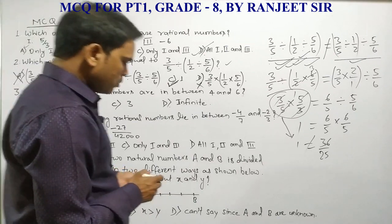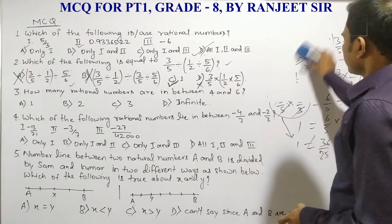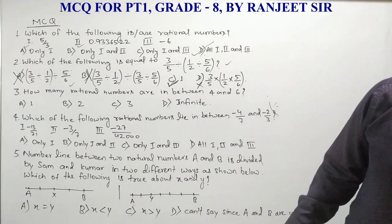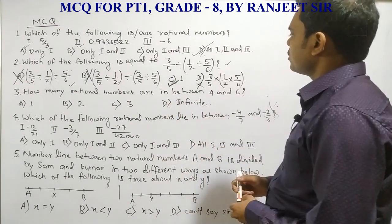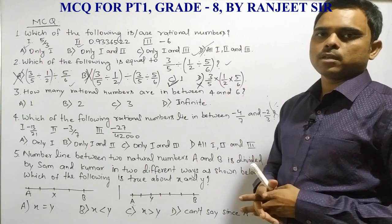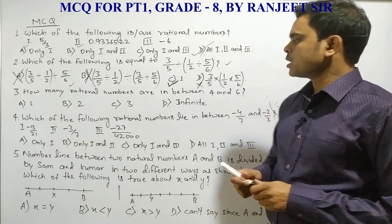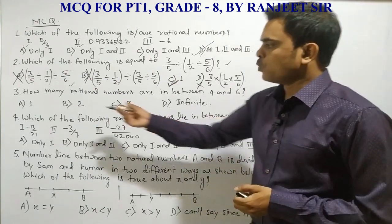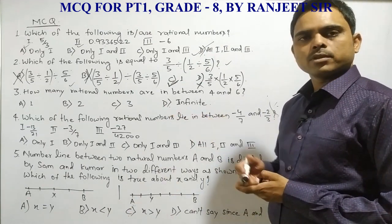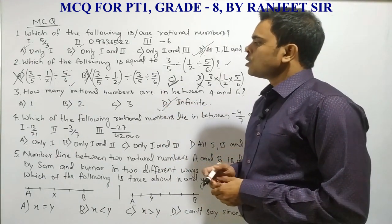Question three is the easiest one: how many rational numbers are there between 4 and 6? We all know there are infinitely many rational numbers existing between any two numbers. So option A (one) is not true, option B (two) is not true, option C (three) is not true, and only option D — infinite — is the correct answer.